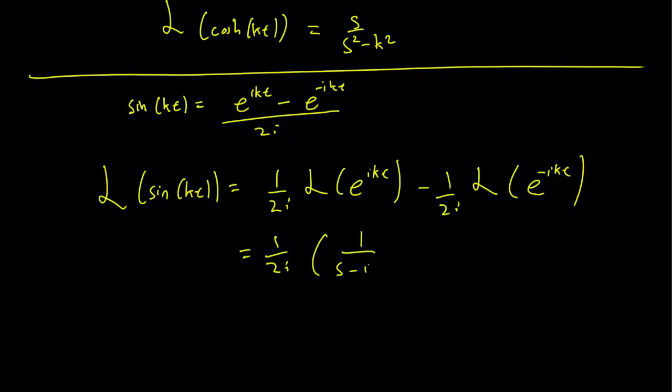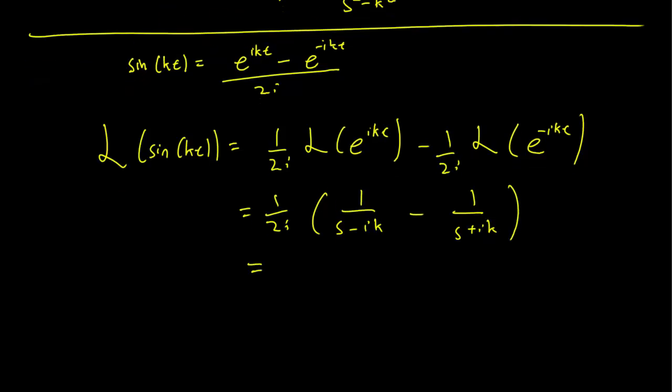So we have 1 over 2i times 1 over s minus ik minus 1 over s plus ik in a similar way as the sinh calculation. And this becomes 1 over 2i times s minus ik times s plus ik,